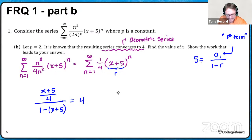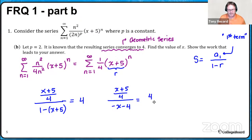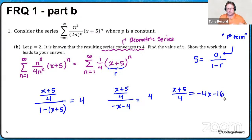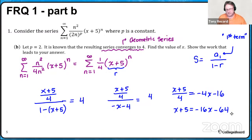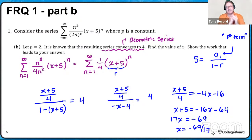Now we clean this up. We have (x+5)/4 in the numerator; distributing the negative sign in the denominator gives (4 - x - 5)/4, which is (-x - 1)/4. Cross multiplying: (x+5) equals 4 times (-x - 1) over 1, giving us -4x - 16 after distributing. Multiplying out: we get -16x - 64. Solving for x: adding 16x to both sides gives 17x = -69, so x = -69/17.